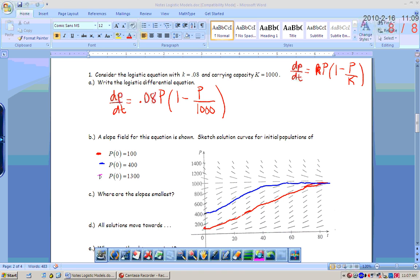You want to show that kind of horizontal asymptote going along there. And if you're starting at 1300, it would look like that.